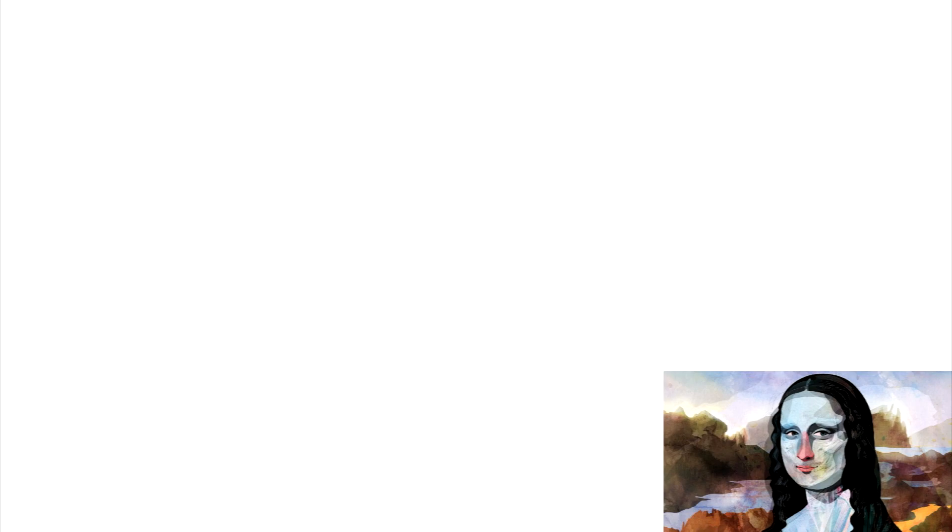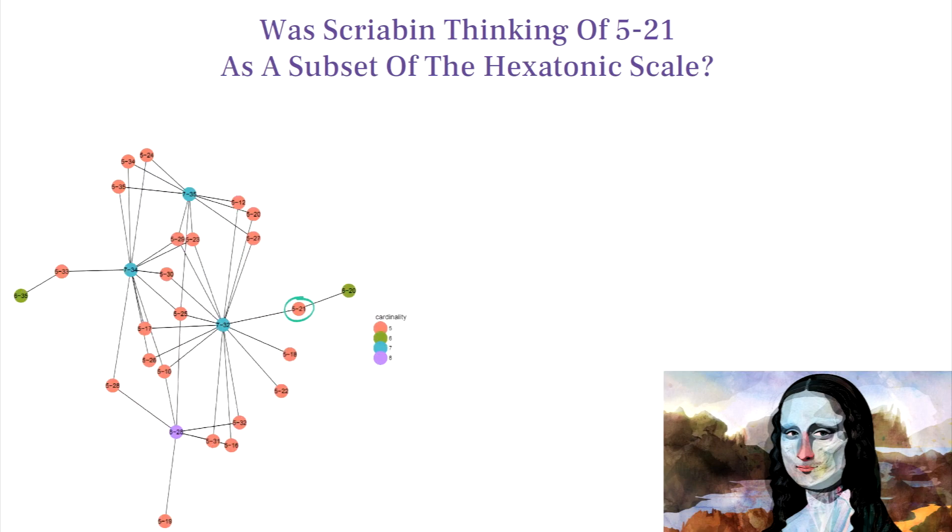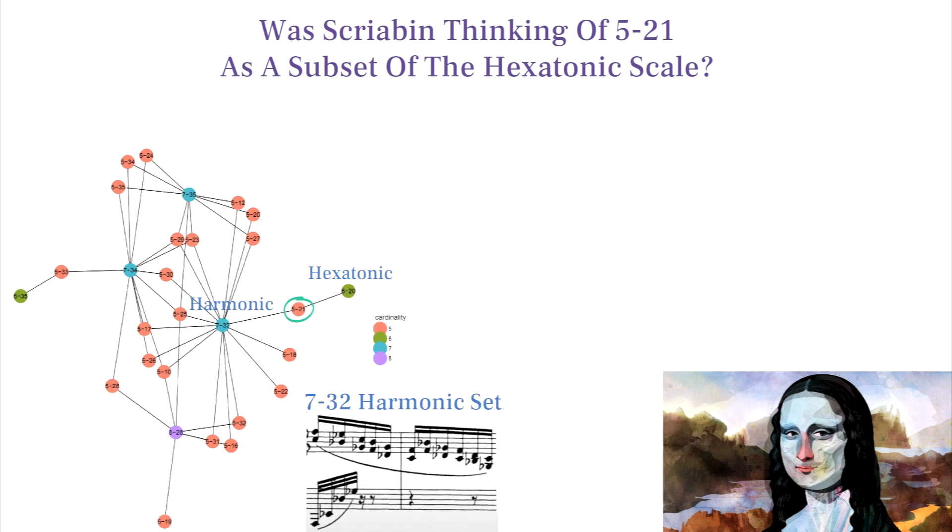This set certainly contributes to the enigmatic sound of the sonata, but does that mean Scriabin was thinking of this set as a subset of the hexatonic scale? The only pressing sets that this set lies within are the hexatonic set and the harmonic set, and we do see a few instances of the harmonic set in this sonata, but there's actually a stranger answer.